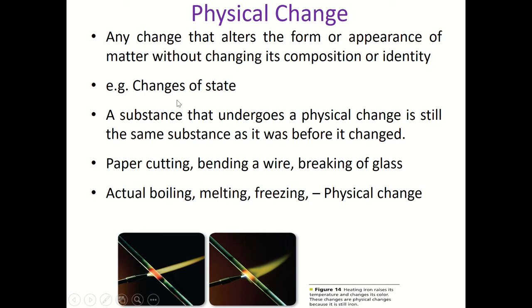A substance that undergoes a physical change is still the same substance as before. Examples include paper cutting, bending a wire, breaking glass, boiling, melting, and freezing — all physical changes. If you heat a piece of metal, the color may change, but the substance itself does not change. The physical property is like shape and size; the physical change is when you alter those without changing the matter itself.